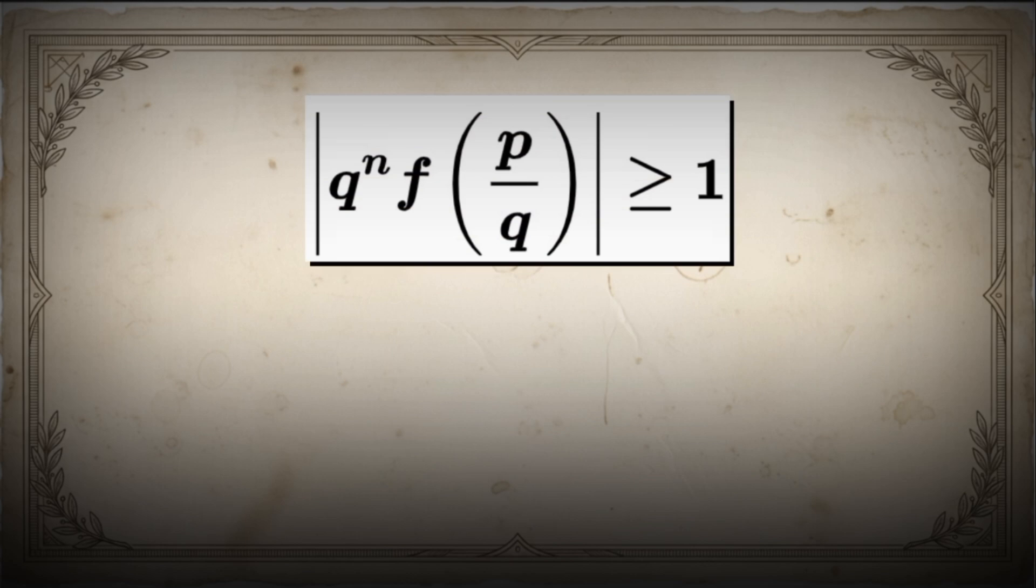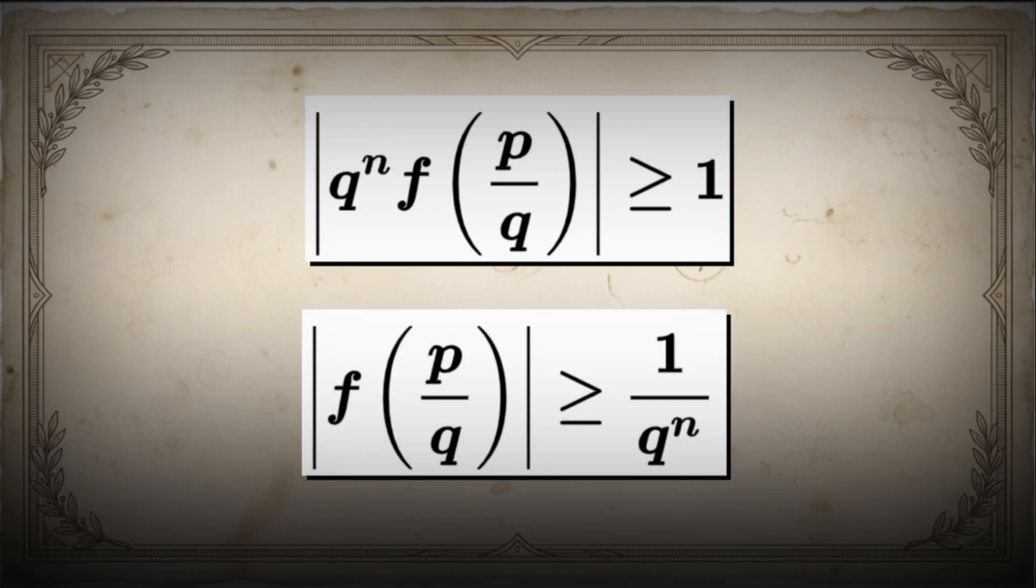Since q to the power n times f of p over q is a non-zero integer, we know that the absolute value of q to the power n times f of p over q must be greater than or equal to 1. This means the absolute value of f of p over q is greater than or equal to 1 over q to the power n.